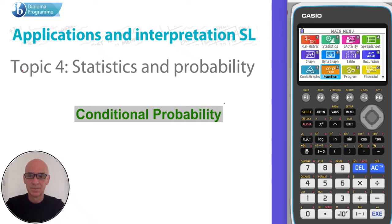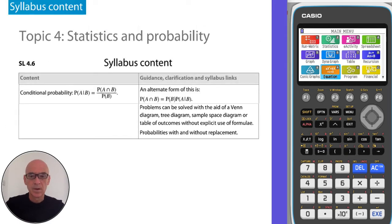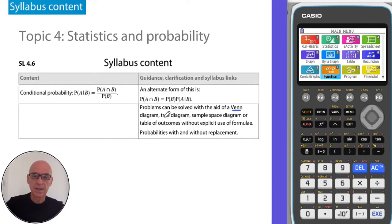Hello. This video is on conditional probability. Here's the syllabus showing you what we have to cover. If you look at the guidance, you can see that conditional probability problems can be solved with the aid of Venn diagrams or tree diagrams, sample space diagrams or tables of outcomes.